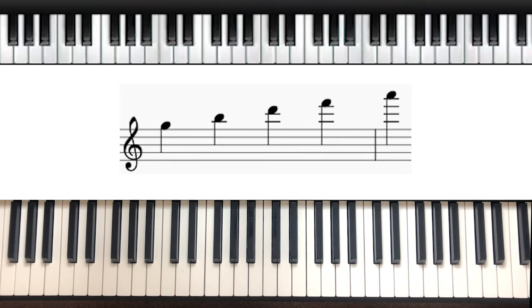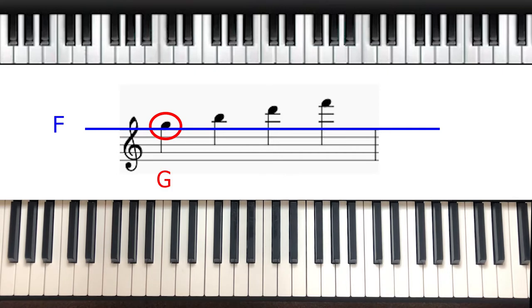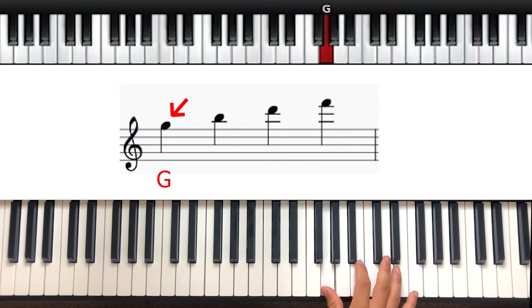For the spaces between the ledger lines, we can just fill in the gaps. So the space above F would be G, as it's the next letter in the alphabet, and notice that there's no line above it because you already have the line under it as a point of reference.